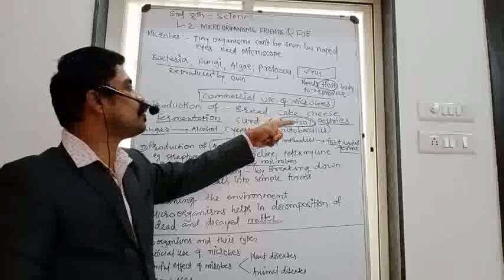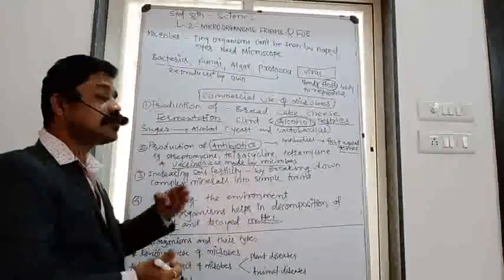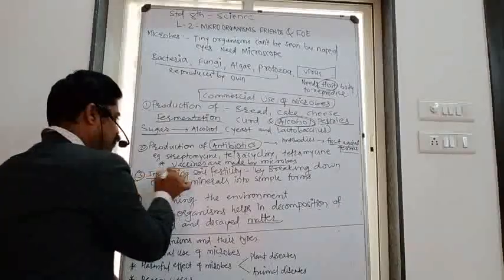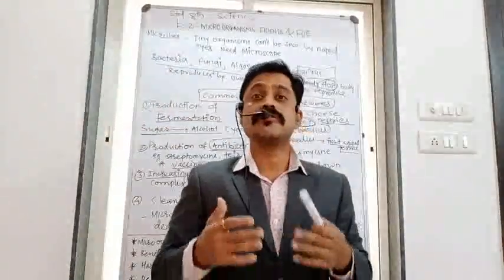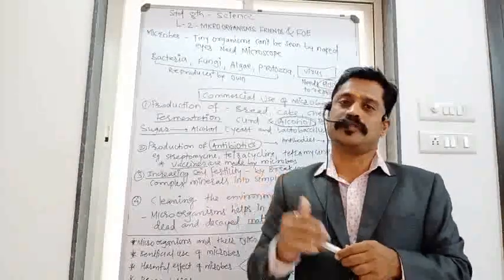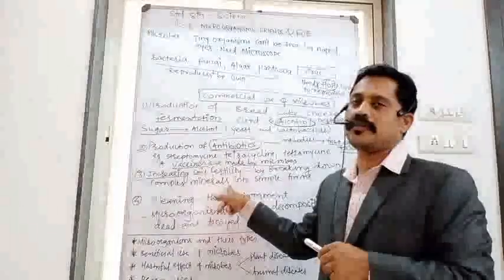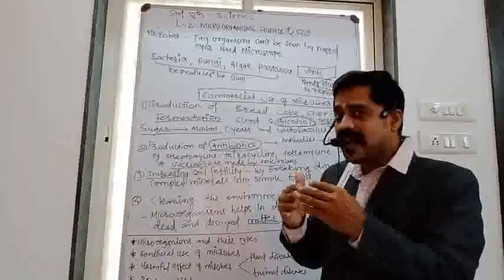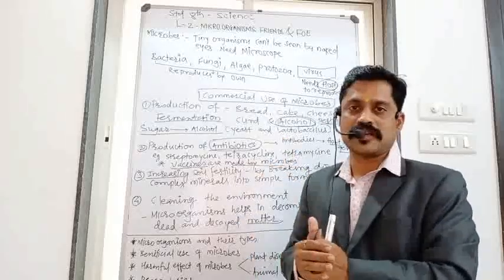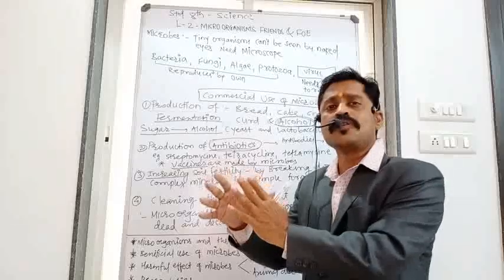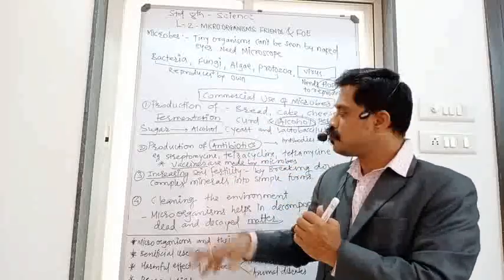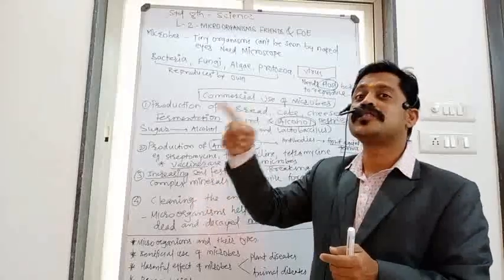So microorganisms are useful for making bread, cake, cheese, curd, pastries, alcohol, and antibiotics. The third important point is that microorganisms increase the fertility of the soil. Some bacteria and fungi convert complex minerals into simpler minerals that can be absorbed by plants and dissolved in water. This is an important work done by microorganisms, which we will study further in the nitrogen cycle.